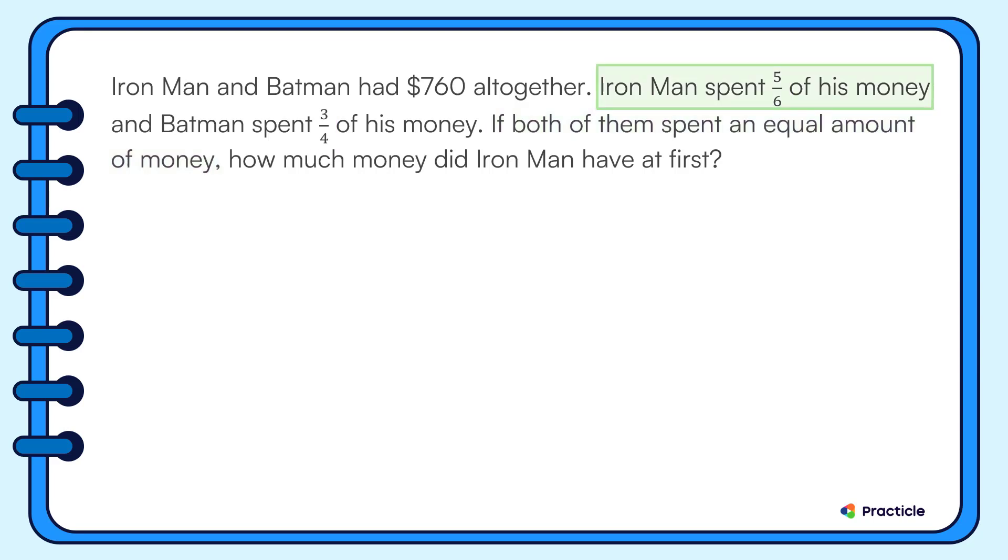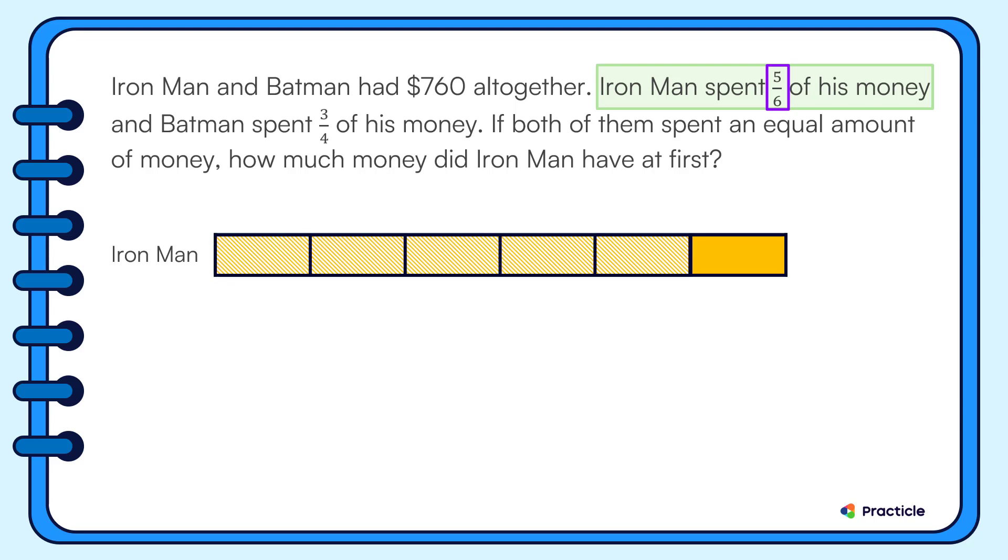We're going to start with Iron Man's money. What fraction of his money did he spend? Yes, five-sixths of his money. Let's draw a bar to represent Iron Man's money. Then, we'll divide this bar into six equal parts and label five of them as what he spent. So far, so good?